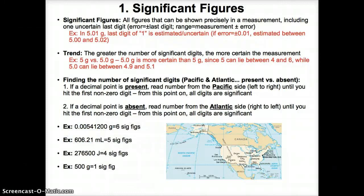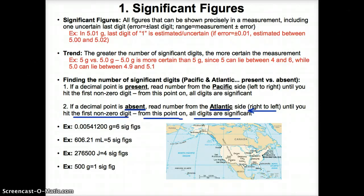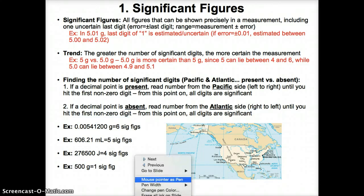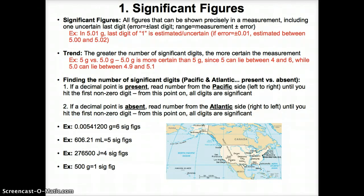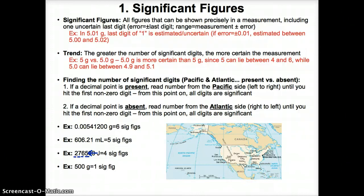If a decimal point is absent in a number, you have to read the number from the Atlantic side — meaning from right to left — until you hit the first non-zero digit. From that point on, all digits will be considered significant. In the third example, I have no decimal point, so I read right to left until I hit the first non-zero digit, which is 5. From 5 onwards, counting backwards to the end, all digits will be considered significant — so I have 4 sig figs in this number.